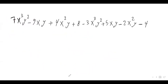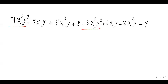Let's move on. I have a long polynomial here. Let's try to identify the like terms. Take 7x cubed y squared — is there any other term in this polynomial with the same variable and same exponent? This one has xy but the exponents are different: it's 1 and 1, but we need 3 and 2, so it's not a like term. This one, x squared y, is not a like term either.